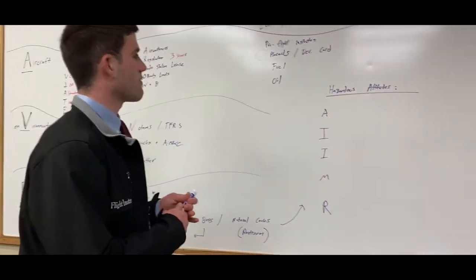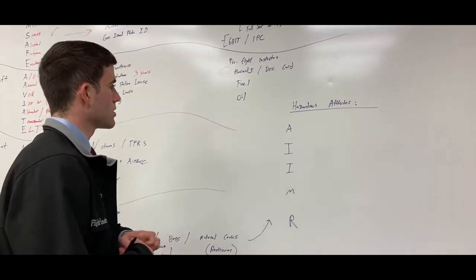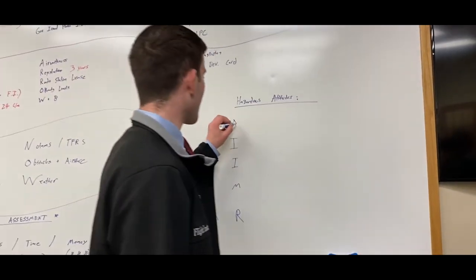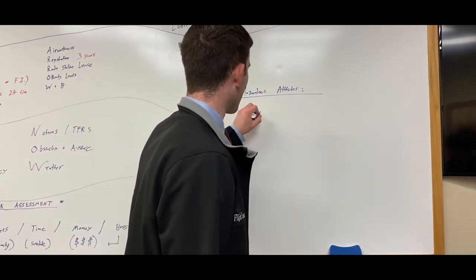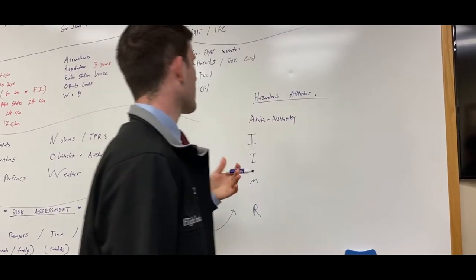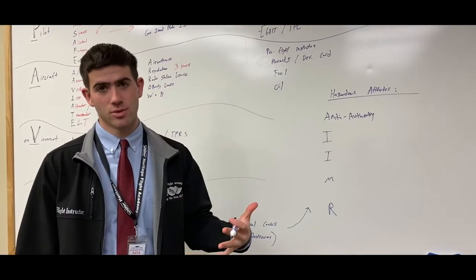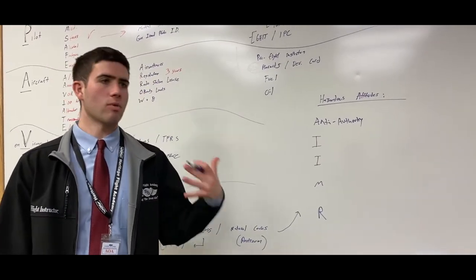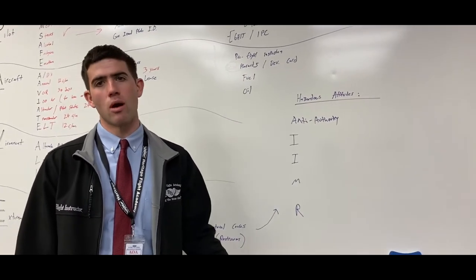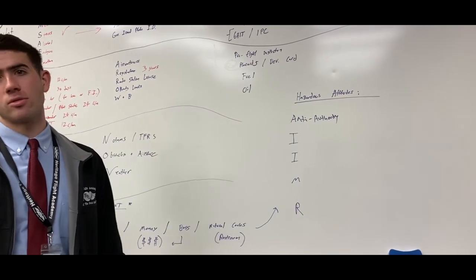And along with that you have hazardous attitudes which is a really important part of your risk assessment. So for the hazardous attitudes you have A which is anti-authority. For anti-authority, that's basically saying you're not following the rules and the regulations, what the regulations say such as minimum fuel required or passenger currency or your own currency.